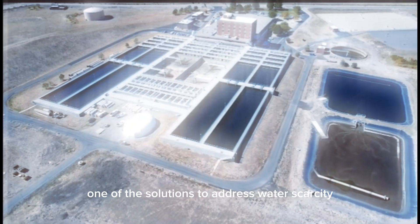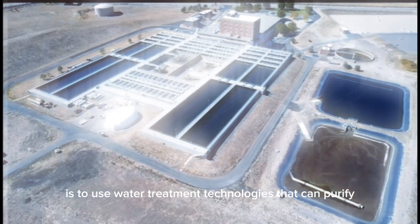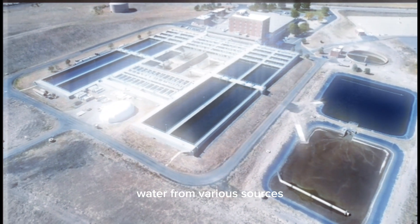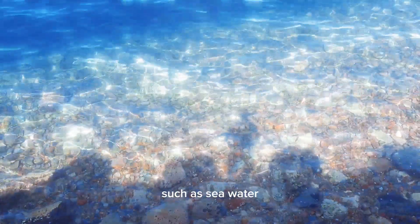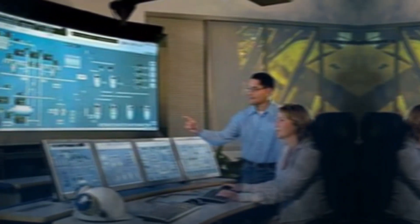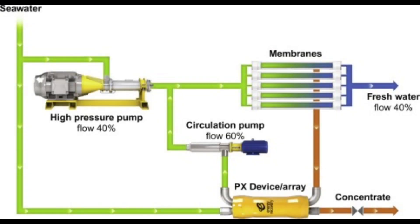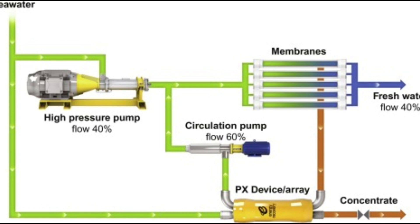One of the solutions to address water scarcity is to use water treatment technologies that can purify water from various sources, such as seawater and brackish groundwater. One of the most common and effective water treatment technologies is reverse osmosis, RO. RO is a process that uses high pressure to force water through a semi-permeable membrane that removes dissolved salts, minerals, and other impurities.